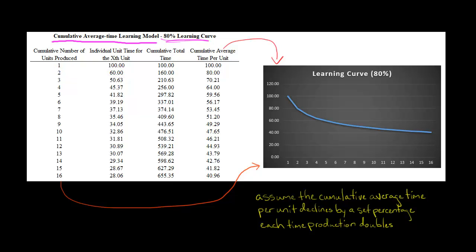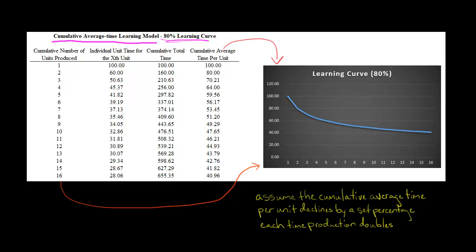We know it was 100 hours to make the first unit and 60 hours to make the second unit. The cumulative total time is 160 hours to make both of them. Taking 160 divided by two units, the average time per unit is 80. So every time production doubles — from one to two, two to four, four to eight, eight to 16 — the average time per unit becomes 80% of the previous value. 100 becomes 80, then 80 becomes 64, and so on.